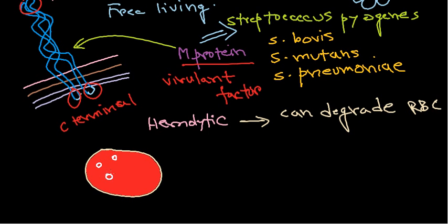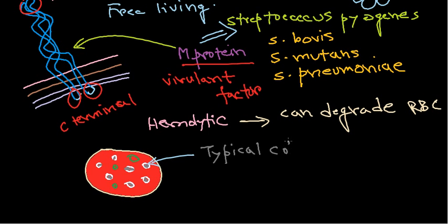The colonies on blood agar will be surrounded by a white zone, or sometimes by a green-colored zone. This white zone forms because the hemolytic Streptococcus degrades the red blood cells surrounding each colony, creating a clear ring. This is a typical colony pattern for Streptococcus species observed on blood agar.